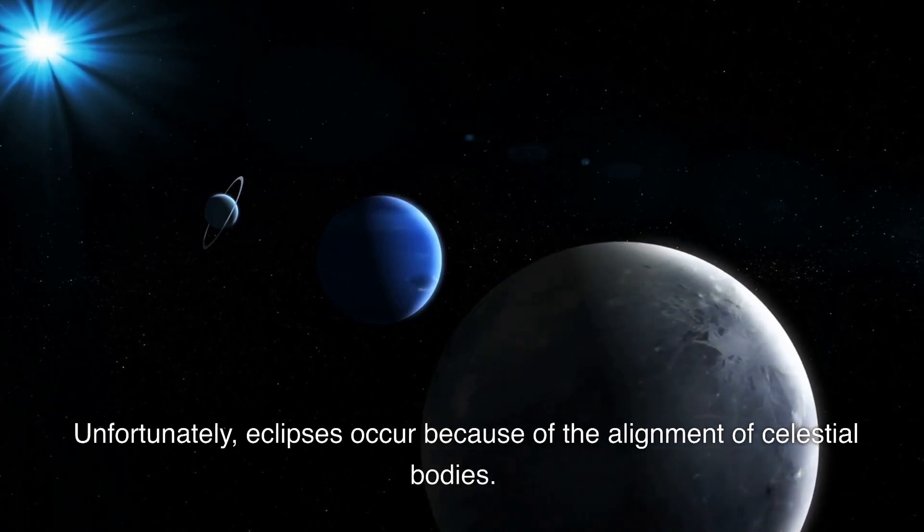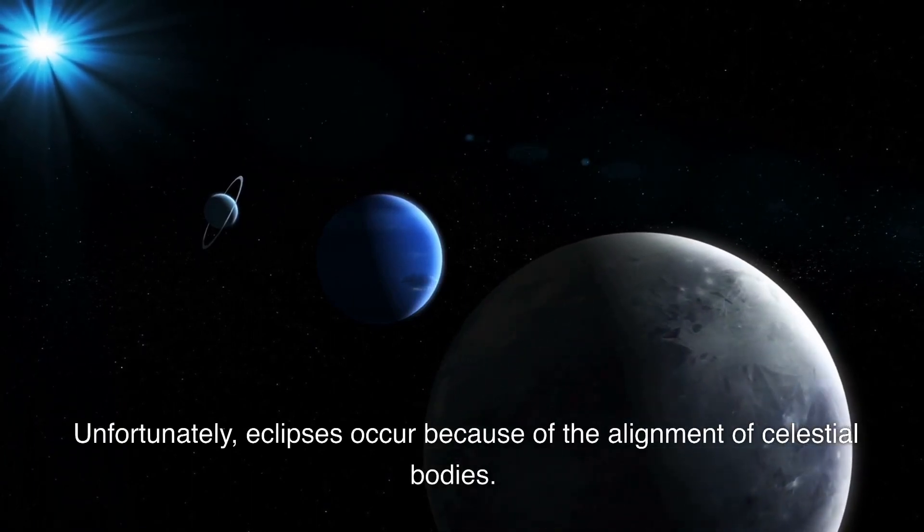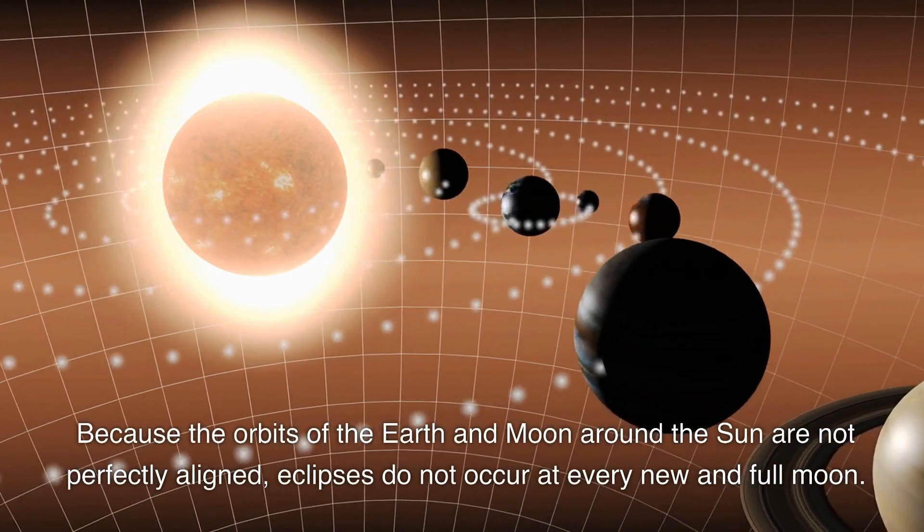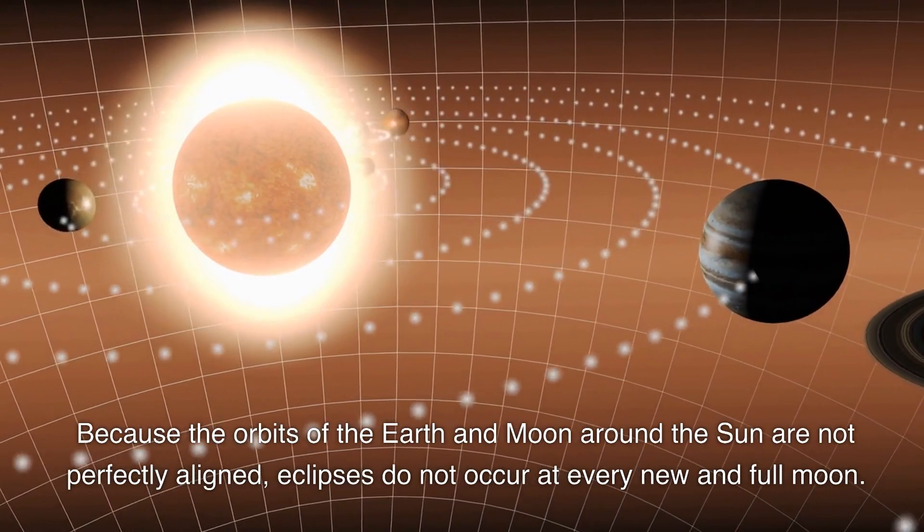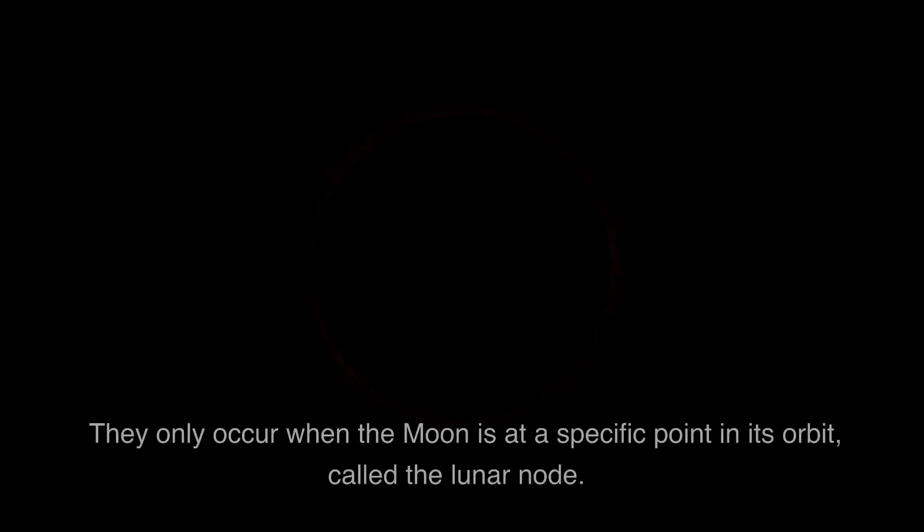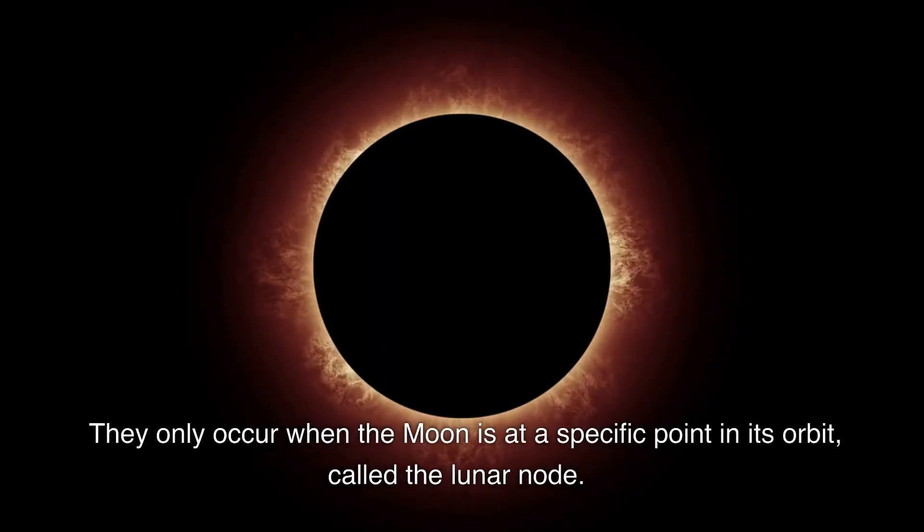Eclipses occur because of the alignment of celestial bodies. Because the orbits of the earth and moon around the sun are not perfectly aligned, eclipses do not occur at every new and full moon. They only occur when the moon is at a specific point in its orbit, called the lunar node.